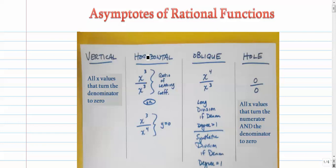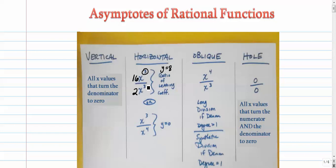Horizontal asymptotes occur when the numerator and denominator have the same exact degree. When that's the case, the horizontal asymptote will just be the ratio of the lead coefficients. So if this were like 16x to the third over 2x to the third, your horizontal asymptote would be at y equals 8 — 16 over 2. So just the ratio of the lead coefficients if the degrees are the same.